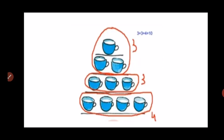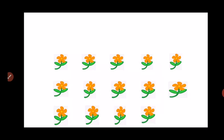Now children, look at the flowers. Can you count the number of flowers? Let's begin. One, two, three, four, five, six, seven, eight, nine, ten, eleven, twelve, thirteen, fourteen. So how many flowers are there? Right, there are fourteen flowers.